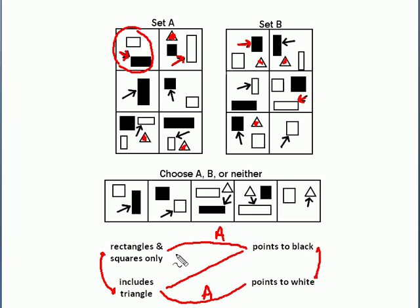Whereas the other combination includes triangle points to black or no triangle points to white. That is a set B. So now I can complete these questions. And that one's, last one's a neither because we don't have it pointing to a triangle at all.